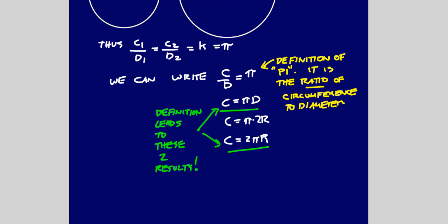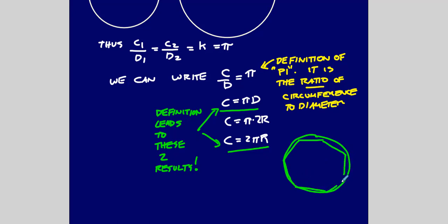If you want to estimate the value of pi, probably the most famous method was done over two thousand years ago by Archimedes. Basically, he started with a hexagon and kept increasing the number of sides on a polygon — he actually did up to 96 sides — until it looked very much like a circle. As you increase the number of sides, the polygon looks more and more like a circle, so your estimate of the circumference gets better and better.